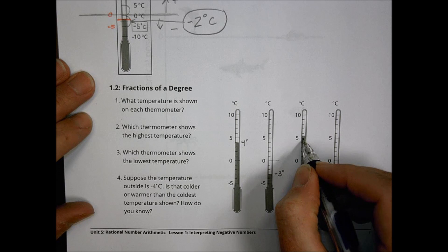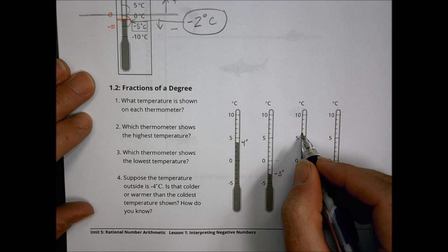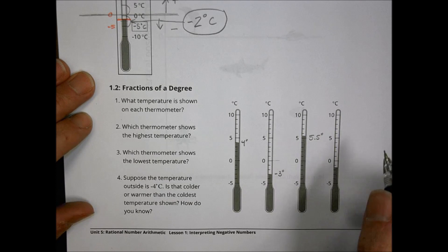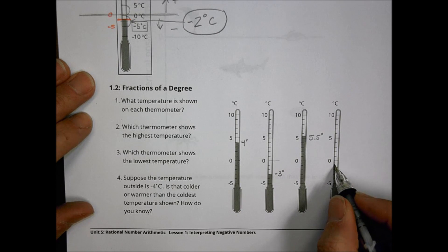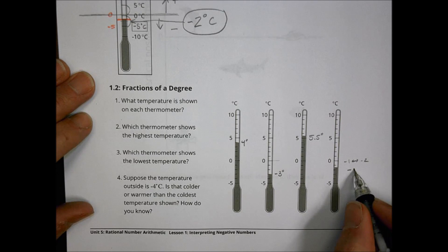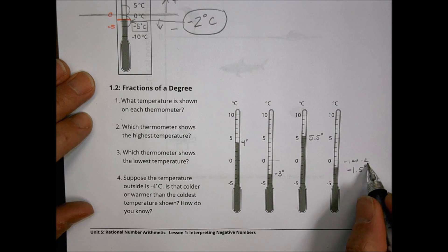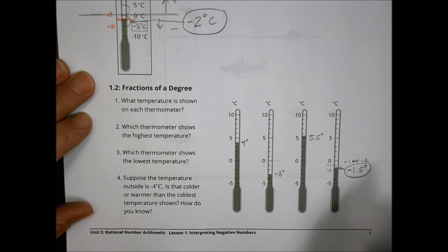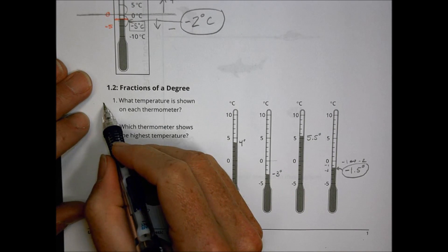The third thermometer is above 5, so we're at positive 5 going toward 6 — probably at 5.5 degrees. You could write that as 5.5 degrees or as a fraction. The fourth thermometer goes down 1 but not quite 2, so we're between negative 1 and negative 2. What's between negative 1 and negative 2 is negative 1.5 degrees.